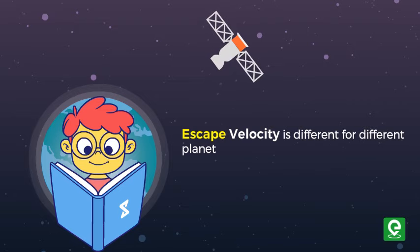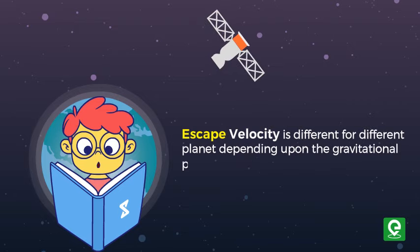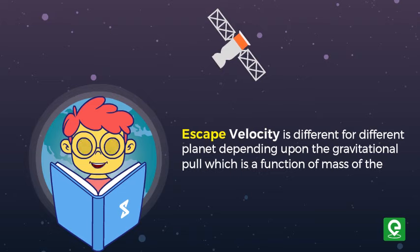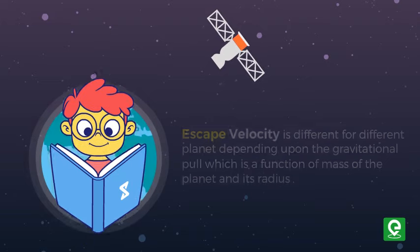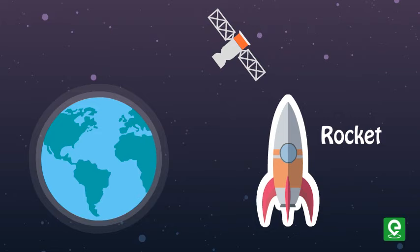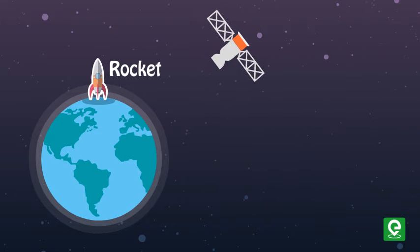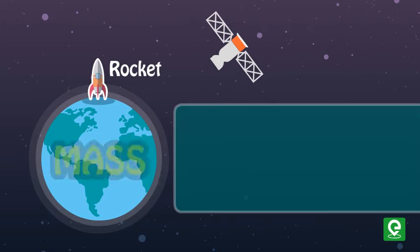Escape velocity is different for different planets depending upon the gravitational pull, which is the function of mass of the planet and its radius. Let's assume that we have to launch a rocket into space from any planet.